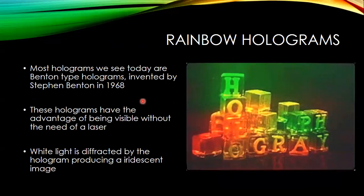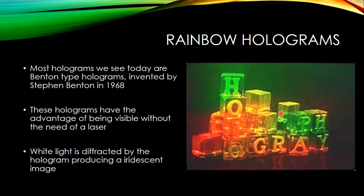Rainbow holograms are probably the most common type of hologram we see today. Also known as Benton-type holograms, they were invented by Stephen Benton in 1968. These holograms made it possible to view a hologram without using laser light, which was very expensive. One problem with these holograms is that although they work well with white light, you're giving up some information — you retain the horizontal parallax, but the vertical parallax is eliminated. If you move left to right the hologram appears to rotate, but moving up and down gives no parallax.